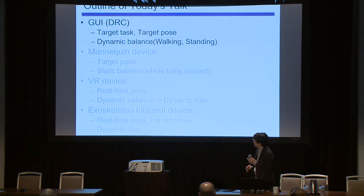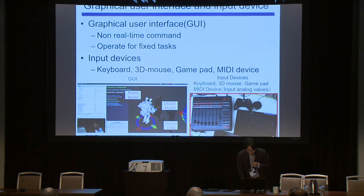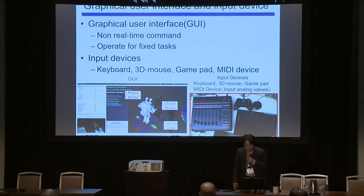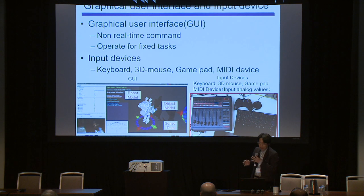Let's start with the GUI devices for the DRC. This graphical interface is used for humanoid teleoperation using the graphical interface, and was used for the DARPA Robotics Challenge Finals. It is a non-real-time command sending system, operating fixed commands for fixed tasks.